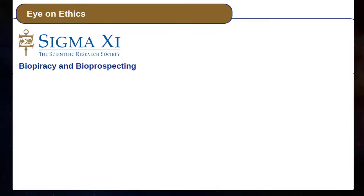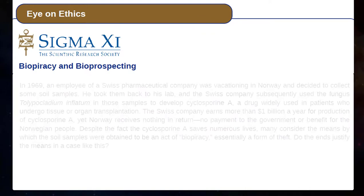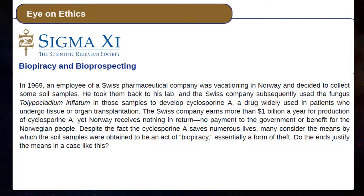Eye on Ethics: Biopiracy and Bioprospecting. In 1969, an employee of a Swiss pharmaceutical company vacationing in Norway collected some soil samples. His company subsequently used the fungus Tolypocladium inflatum in those samples to develop cyclosporine A, a drug widely used in patients who undergo tissue or organ transplantation. The Swiss company earns more than one billion dollars a year from production of cyclosporine A, yet Norway receives nothing in return — no payment to the government or benefit for the Norwegian people. Despite the fact that cyclosporine A saves numerous lives, many consider the means by which the soil samples were obtained to be an act of biopiracy, essentially a form of theft. Do the ends justify the means in a case like this?